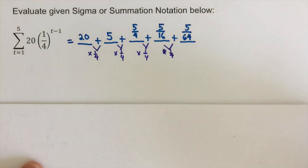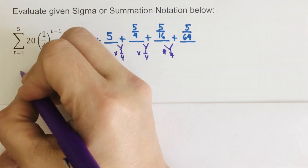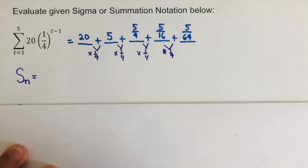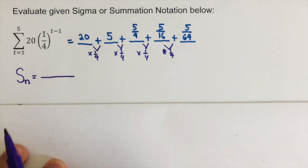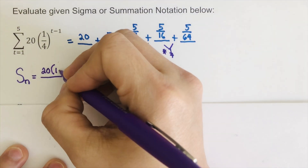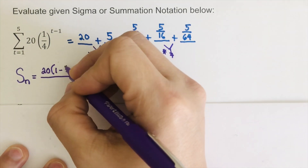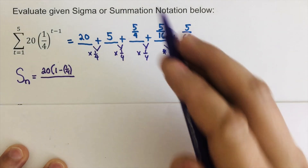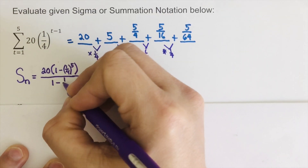Our next task is to find the sum. Just like the equation from the first example, S sub N for this finite geometric series going to five terms: A sub one is 20, times (1 minus r), our r is one fourth, raised to the power of five, over (1 minus r), which is one fourth.